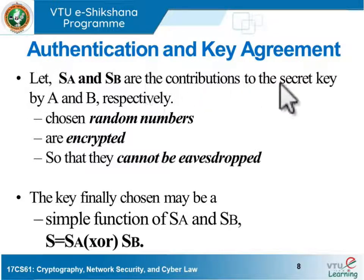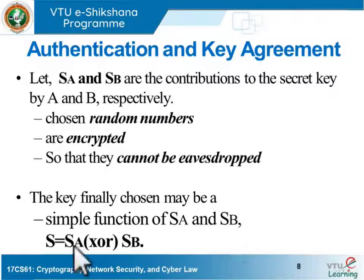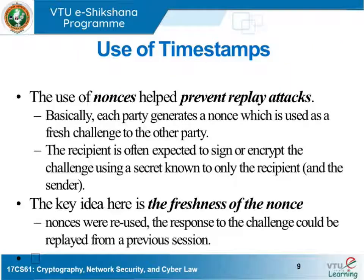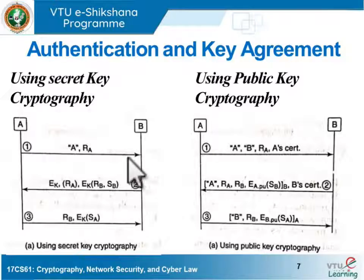SA and SB are contributions to the session key by A and B respectively. They are random numbers, encrypted so they cannot be eavesdropped. From these values, a session key can be deduced at both sender and receiver. A simple way to deduce the session key is by XOR-ing SA and SB to get the new session key. We have seen two ways — secret key and public key approaches — to obtain session keys while performing mutual authentication.